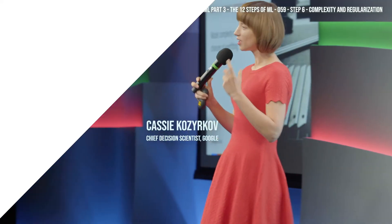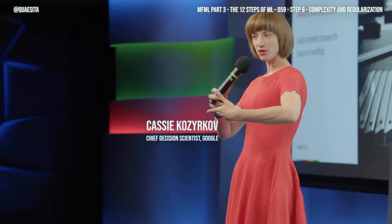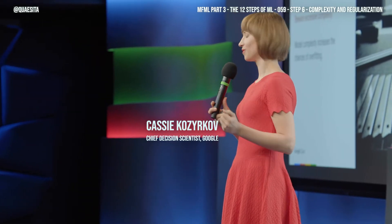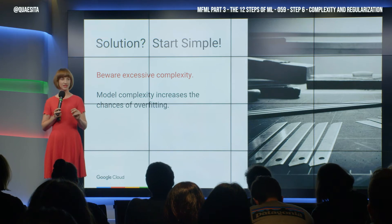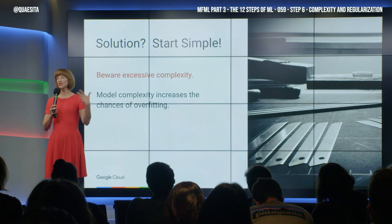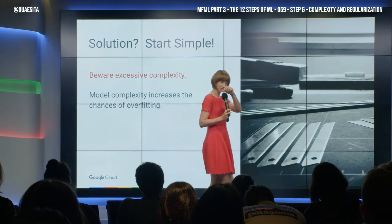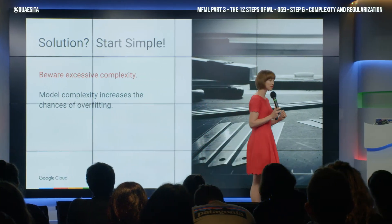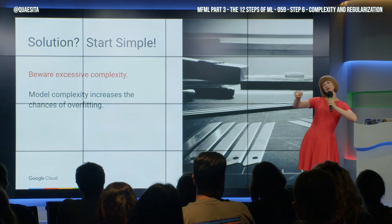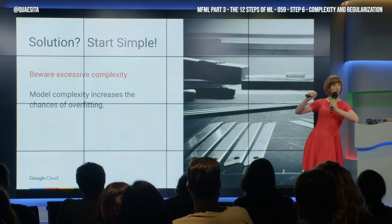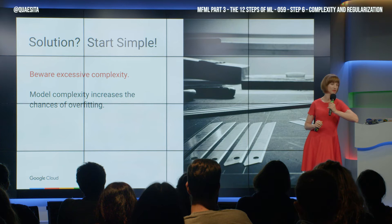Turns out that the more complicated your model is, the more you open yourself up to overfitting. You can go and poke around in the mathematical details later, but layman's terms work pretty well for this as well. You can just think of it like this: the recipe you're going to use to convert inputs into outputs — the longer it takes to write that recipe out, the more complicated it is. A recipe with more ingredients in it is a more complicated recipe.